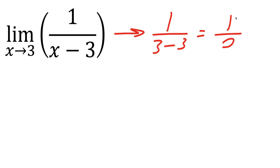Whenever we have a number divided by zero, that's going to be a red flag that we need to approach this problem differently. The way we're going to approach this problem is to see what is the limit as x approaches three to the left and three to the right. And I'll explain what I mean by that.